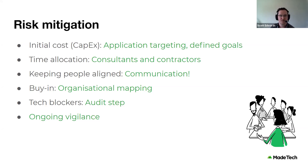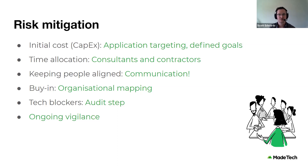To minimize capex, focus on targeting the highest-value applications in your modernization efforts. For time allocation, you may need to temporarily beef up your team with consultants or contractors — and if you do, set the upskilling and empowerment of your internal teams as one of the outcomes those consultants are measured on. For keeping people aligned, communication is key. Feed a consistent message to all teams including constant comms with end users. Following an agile way of working can help here, as agile is built on communication and helps build inter-team trust.